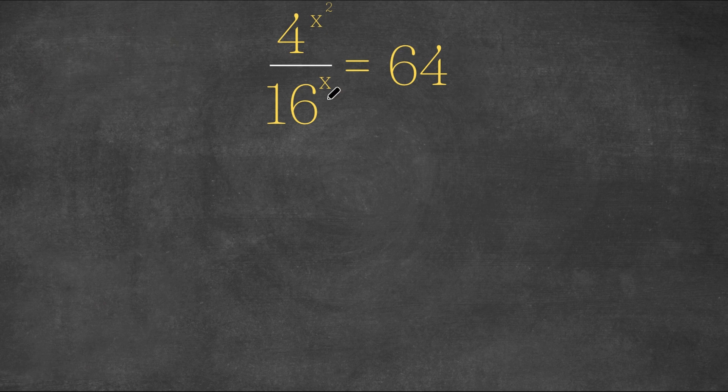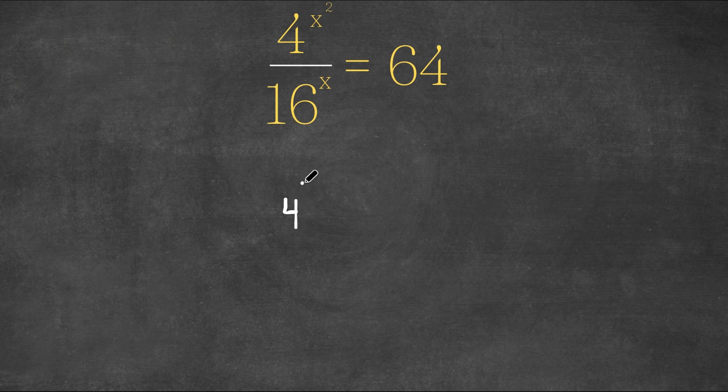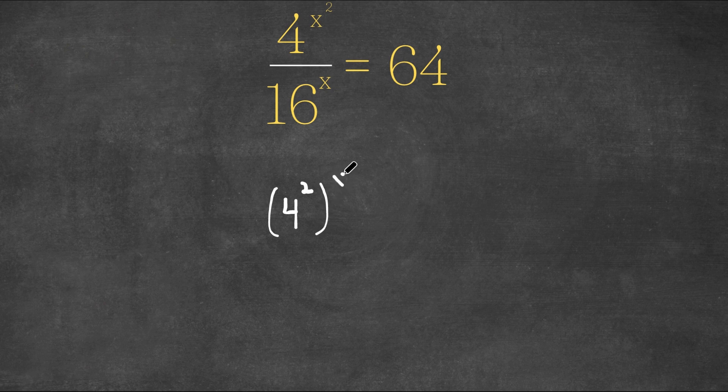Now, 16 is the same thing as 4 squared. So I'm actually going to replace 16 over here with 4 squared. So we have 4 squared to the power of x and we have 4 to the power of x squared as a numerator.